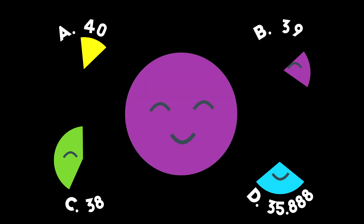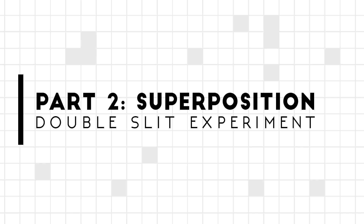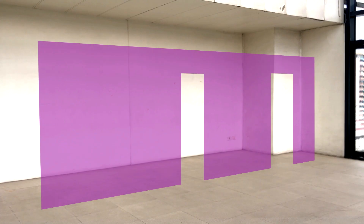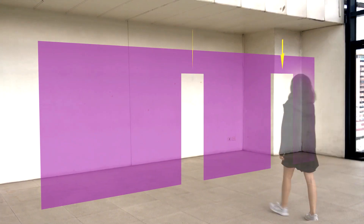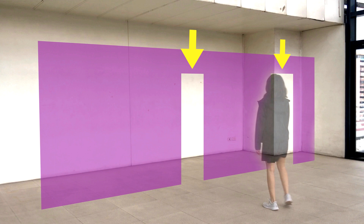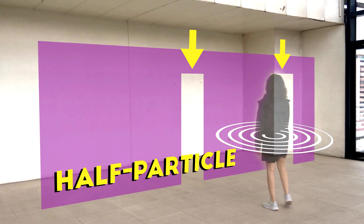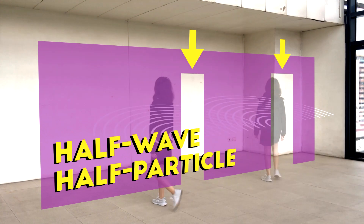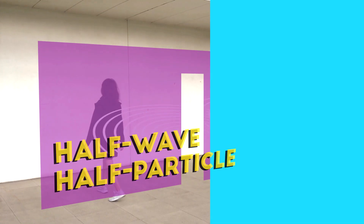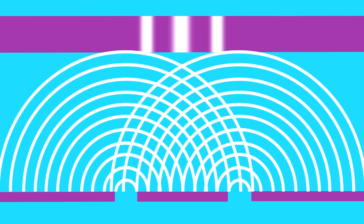Sounds crazy, but here's a demonstration: the double slit experiment. We expect an electron to pass through only one of the slits, but because the electron thinks it's half particle and half wave, it passes through both at the same time. It interferes with itself as a wave, and we see that in the pattern it produces.